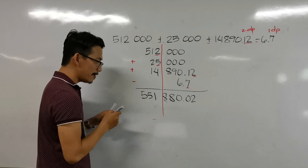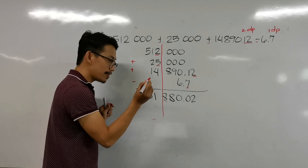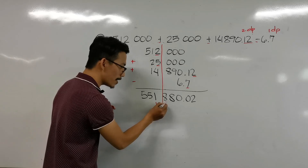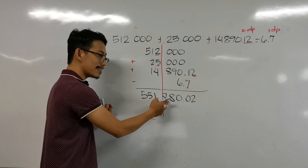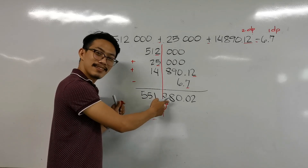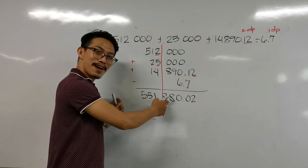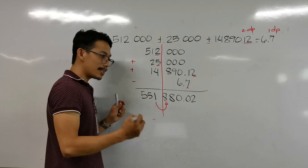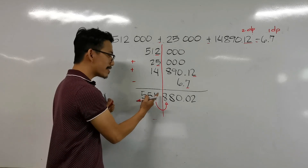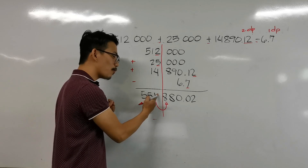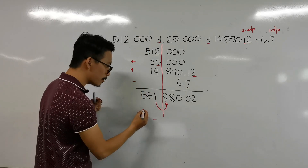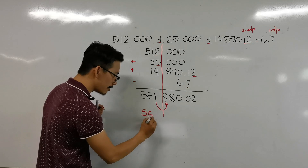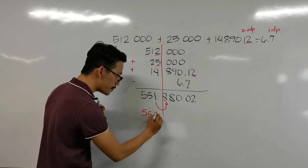Take note of the number after that position. In this case, it is 8, which is greater than 5. That means we must round our digit up. So our final answer is 552,000.